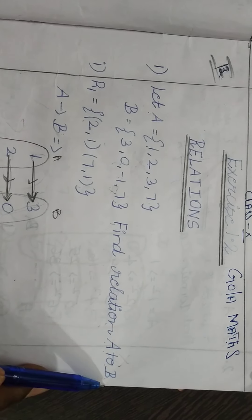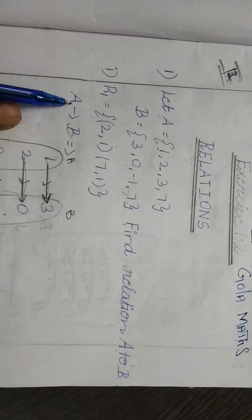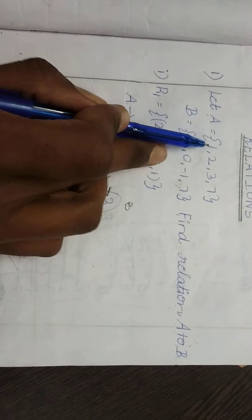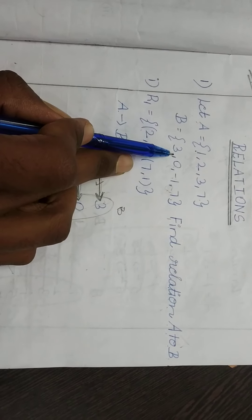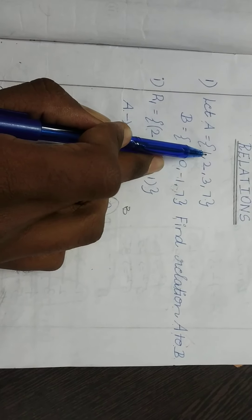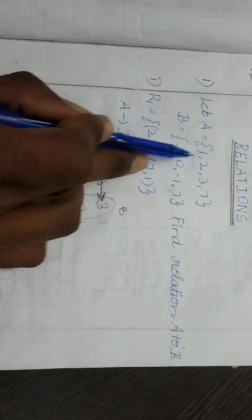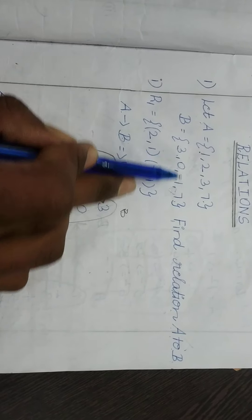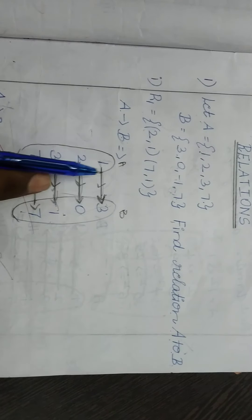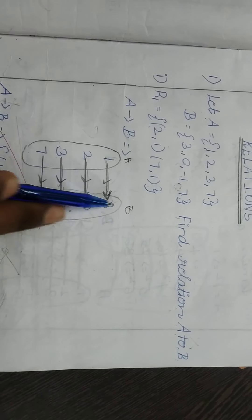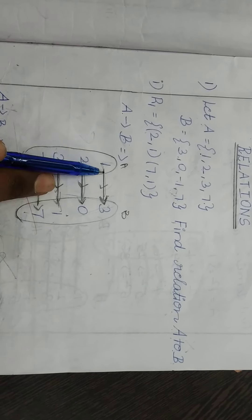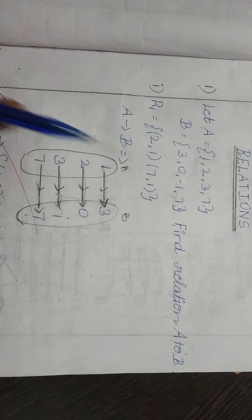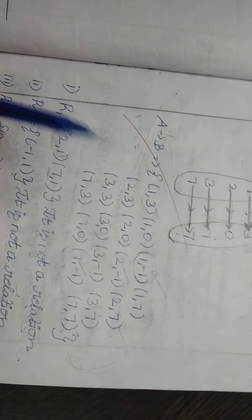Relation A to B means A related to B, A intersect B related. So A will be 4 elements, B will be 4 elements. Next we have 4 questions.